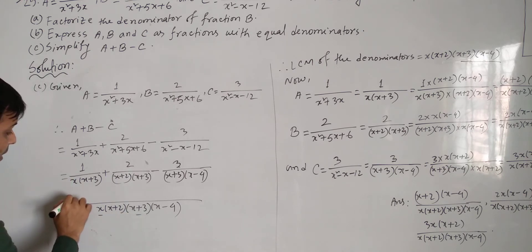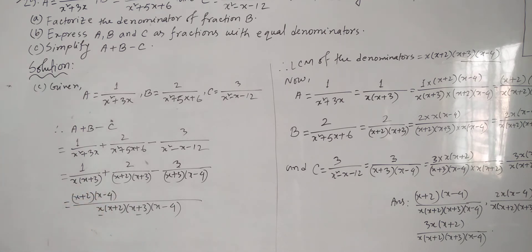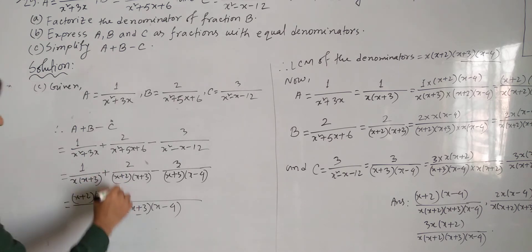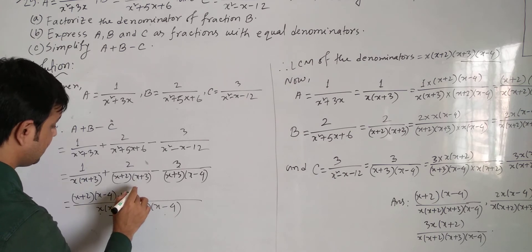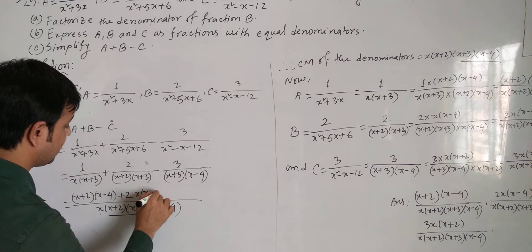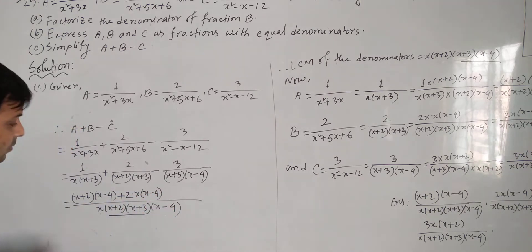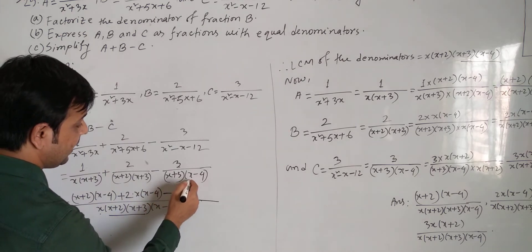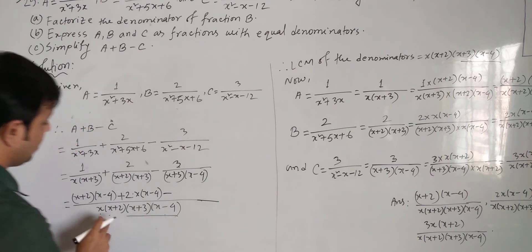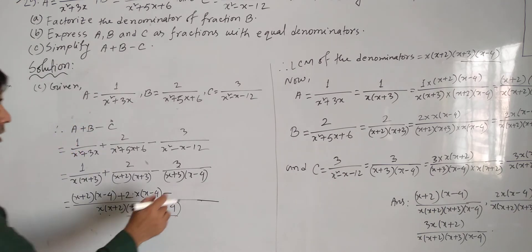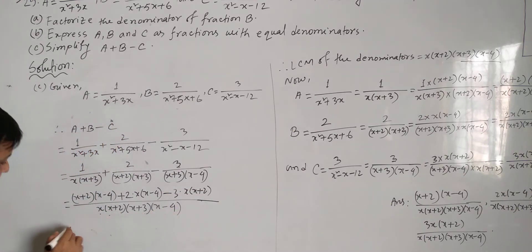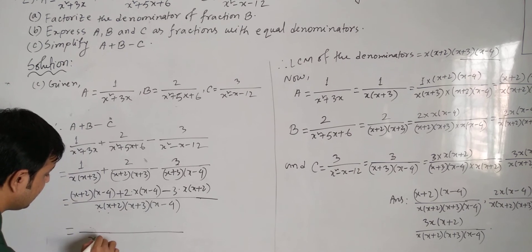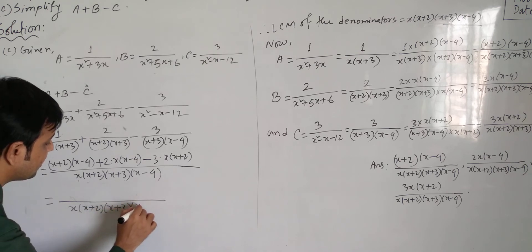Dividing the LCM by each denominator: for the first term, (x + 2)(x - 4) remain; for the second term (with numerator 2), x(x - 4) remain; and for the third term (with numerator 3), x(x + 2) remain. So the numerator becomes: (x + 2)(x - 4) plus 2·x(x - 4) minus 3·x(x + 2), all over x(x + 2)(x + 3)(x - 4).